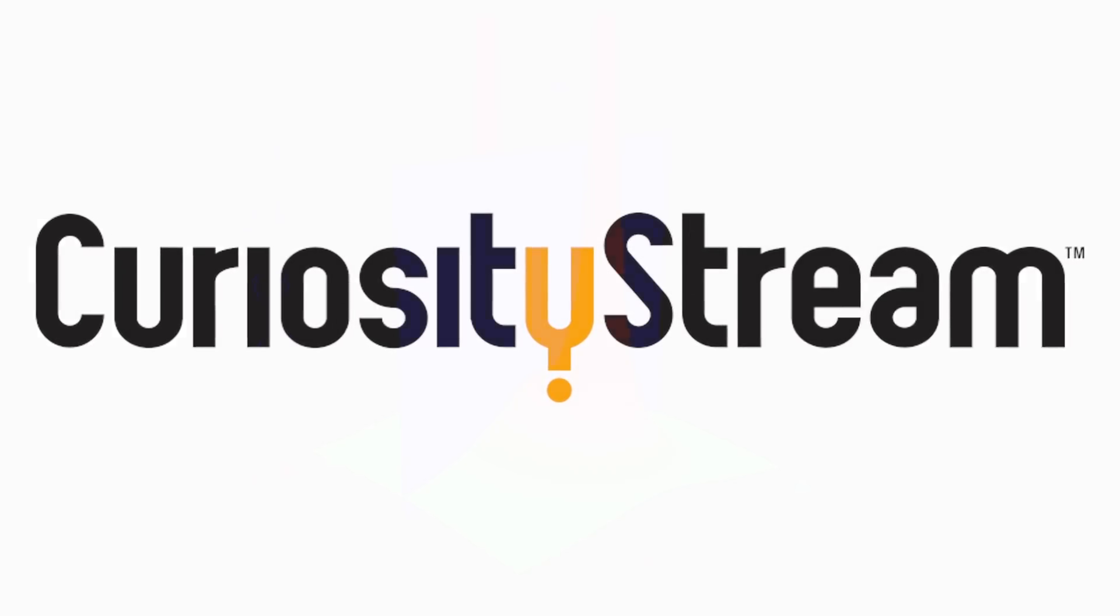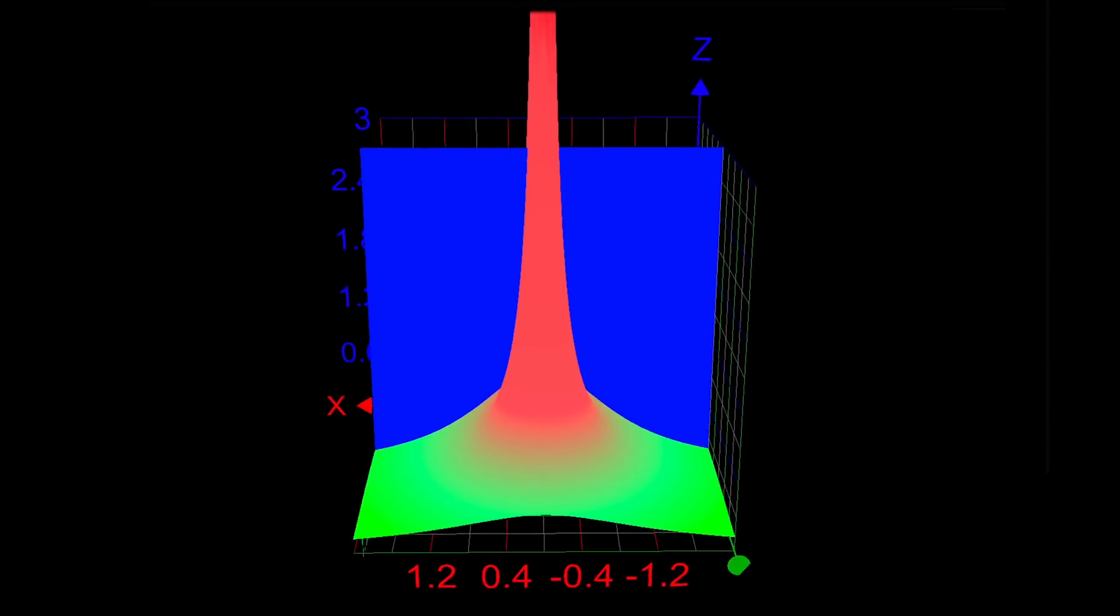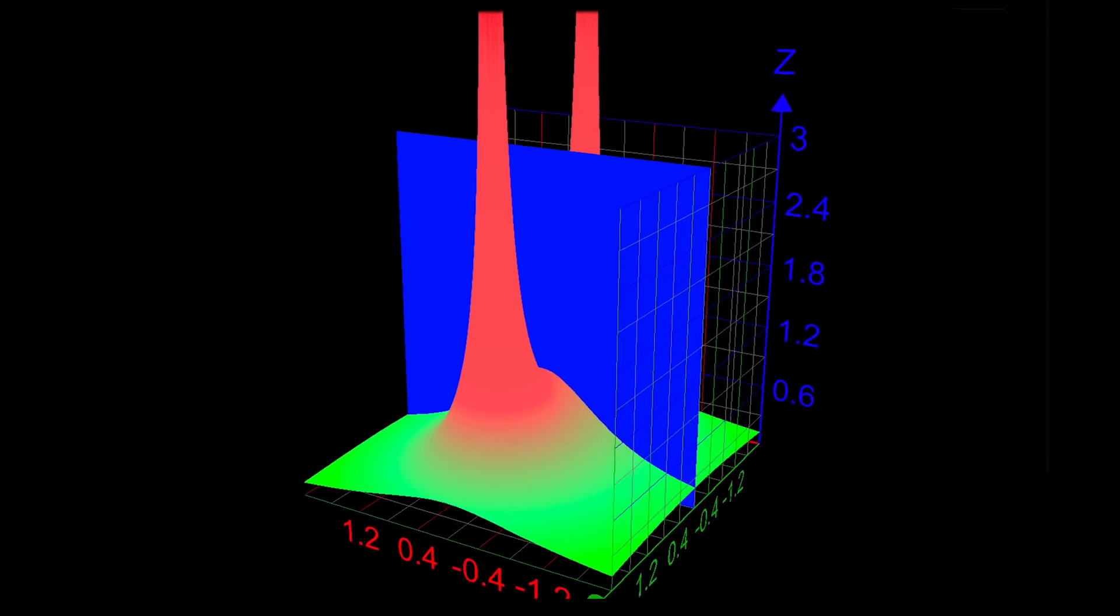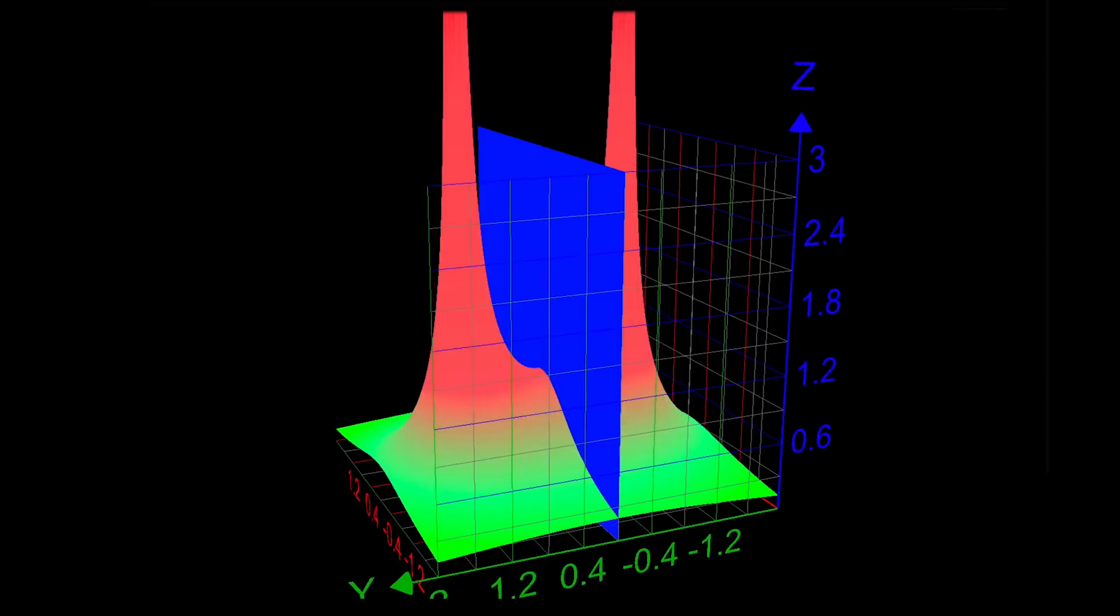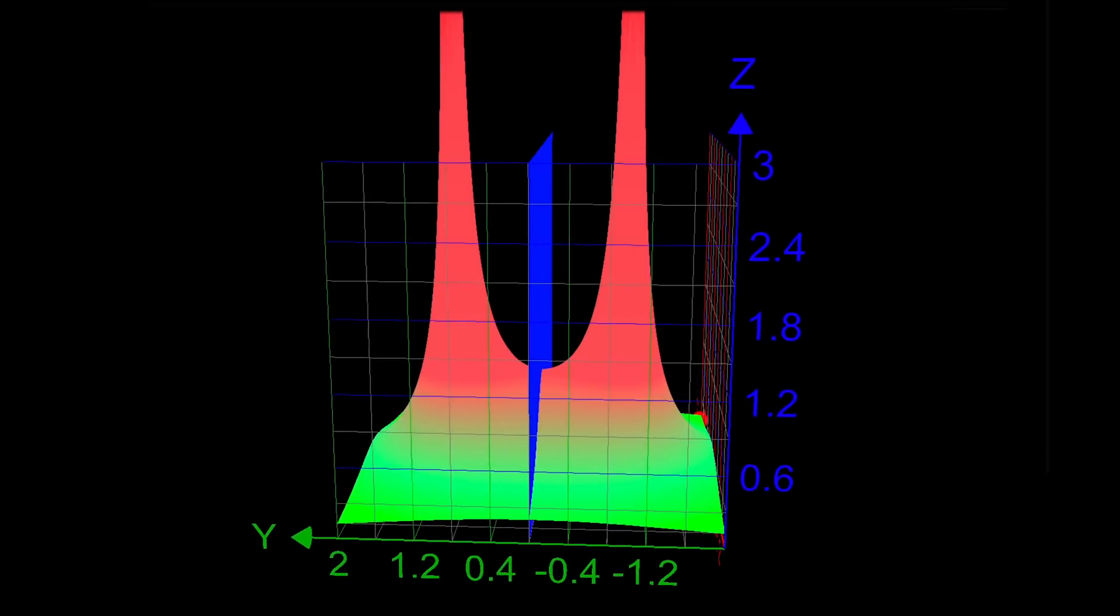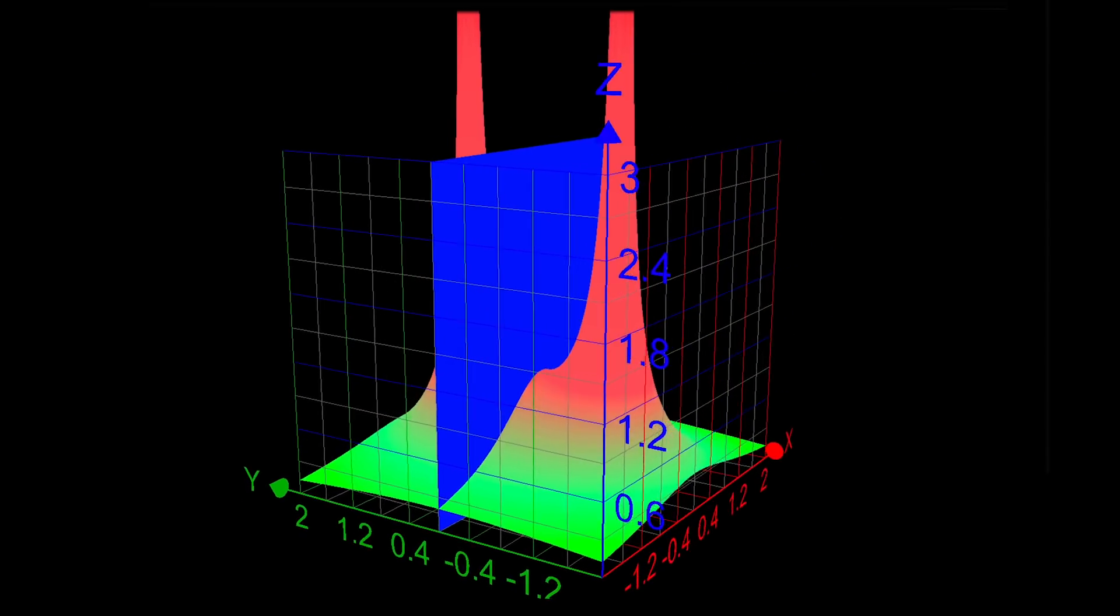I still find it surprising just how often imaginary or complex numbers come up within mathematics when you just don't expect them to. In Calculus 2, or Calc BC, we learn about the Taylor and McLaurin series for the first time.